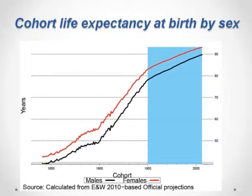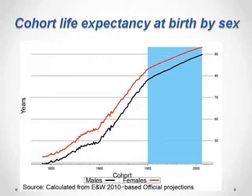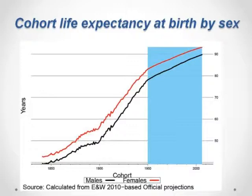Looking into the future, official projections show cohort life expectancy — rather than period expectancy — for people born from 1850: improvements through to 1900, an acceleration from 1900, moving up through to 1950 for both men and women. From 1950 onwards these are more speculative, since those people are now aged about 60 and what happens to them depends on the future. What one sees is an apparently fairly rapid decline in the rate of improvement in mortality compared to what we've experienced in the past.